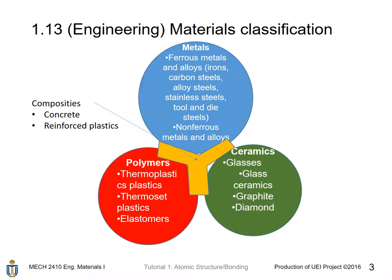If a material consists of more than one type of material — for example, metals and polymers, or metals and ceramics — we call it a composite. For example, concrete consists of ceramic and metal, and reinforced plastic consists of plastic and metal. We call these composites.